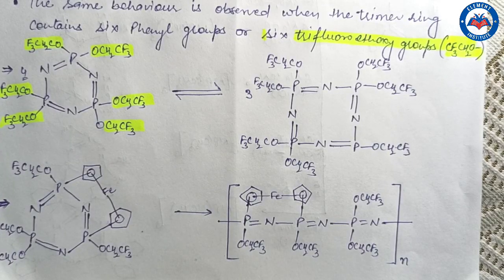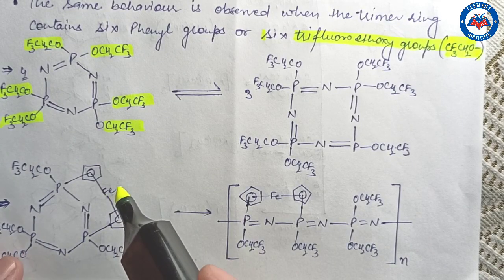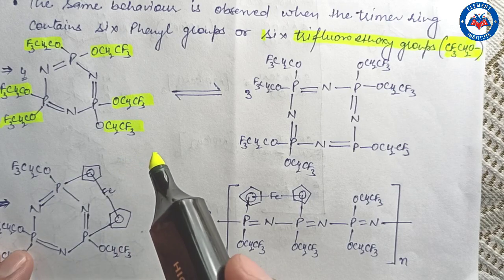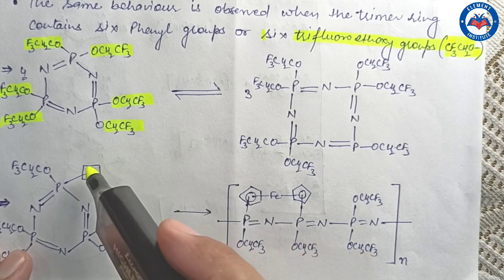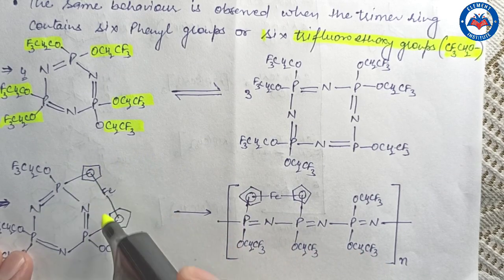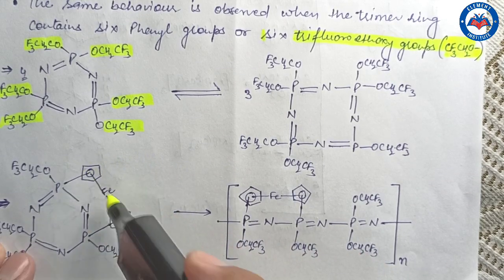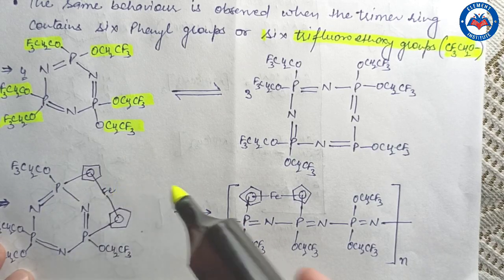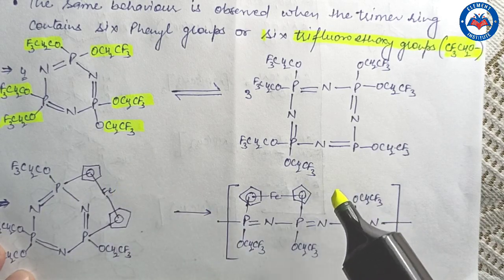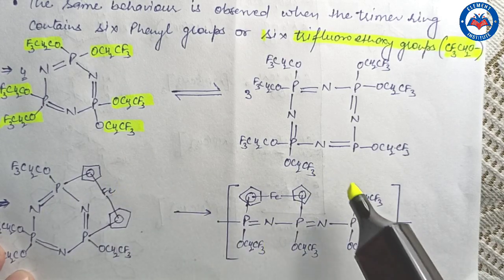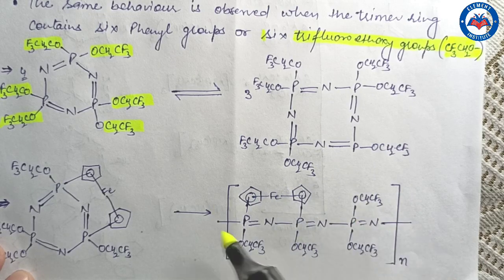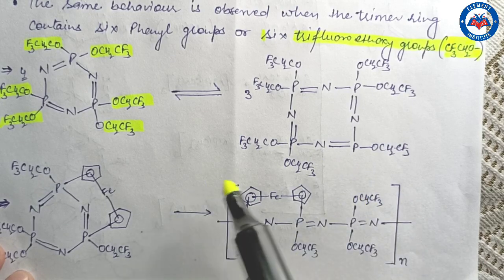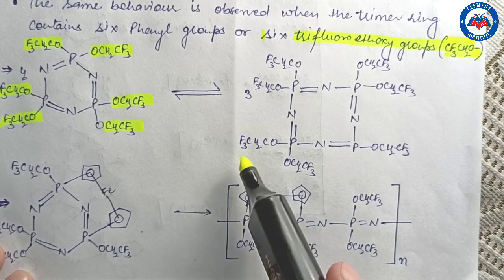However, this restriction does not hold if the phosphorus ring is subjected to ring strain by the presence of a ferrocenyl group. Under these conditions, polymerization takes place even if no halogen atom is present or attached to the phosphorus atom.